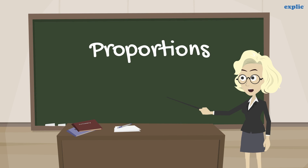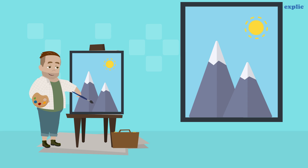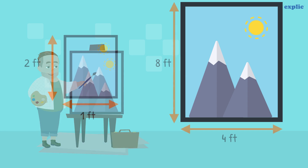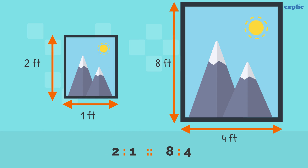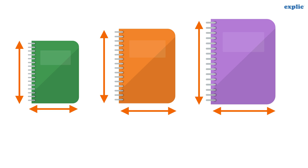Let's see some more examples of proportion. If we are making a small painting looking at the big painting, we take the relative size of the scenery — that means the height and width of the painting would be in proportion. You must have noticed that the length to breadth ratio of a notebook usually maintains a certain ratio, irrespective of its size.